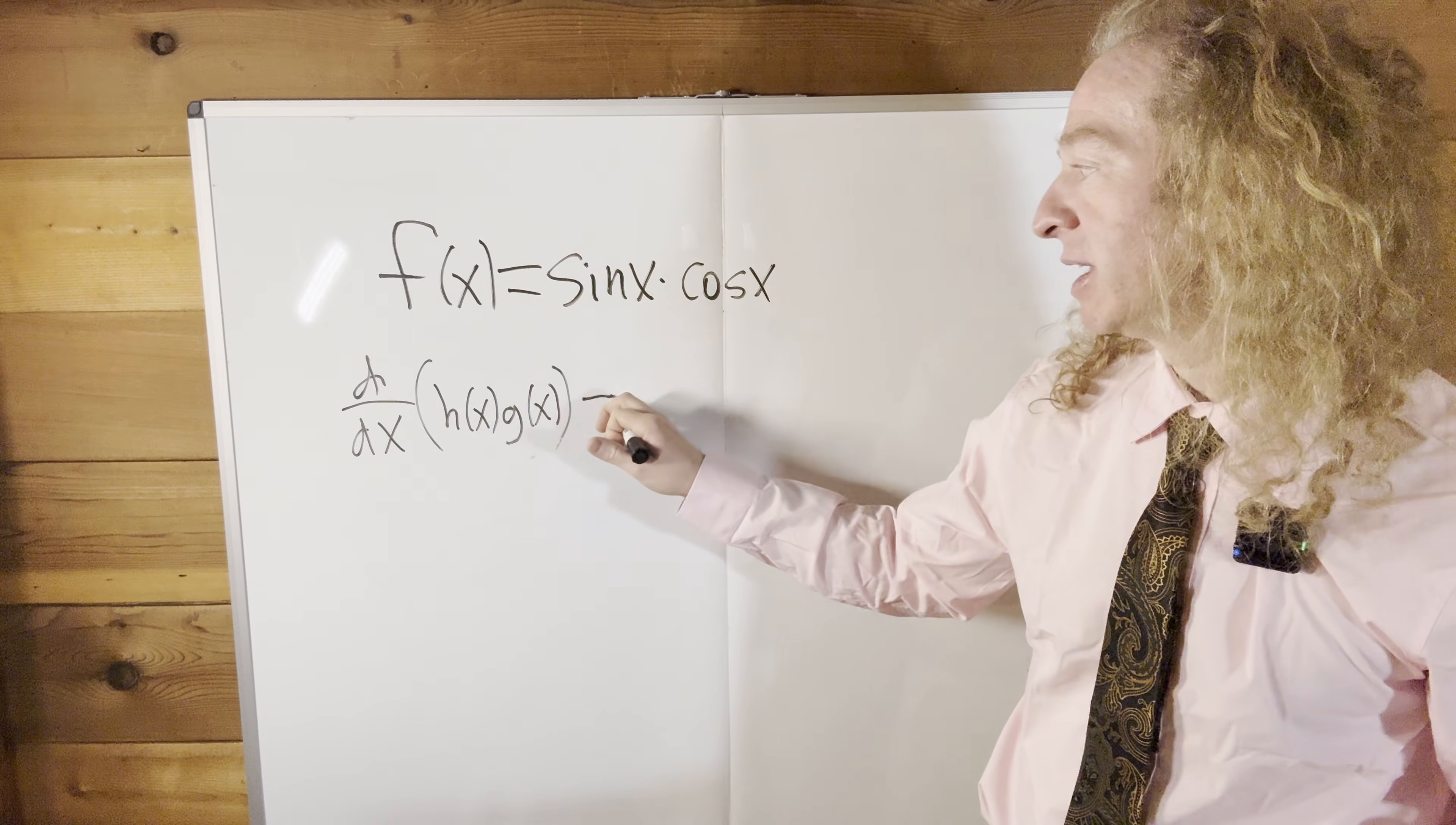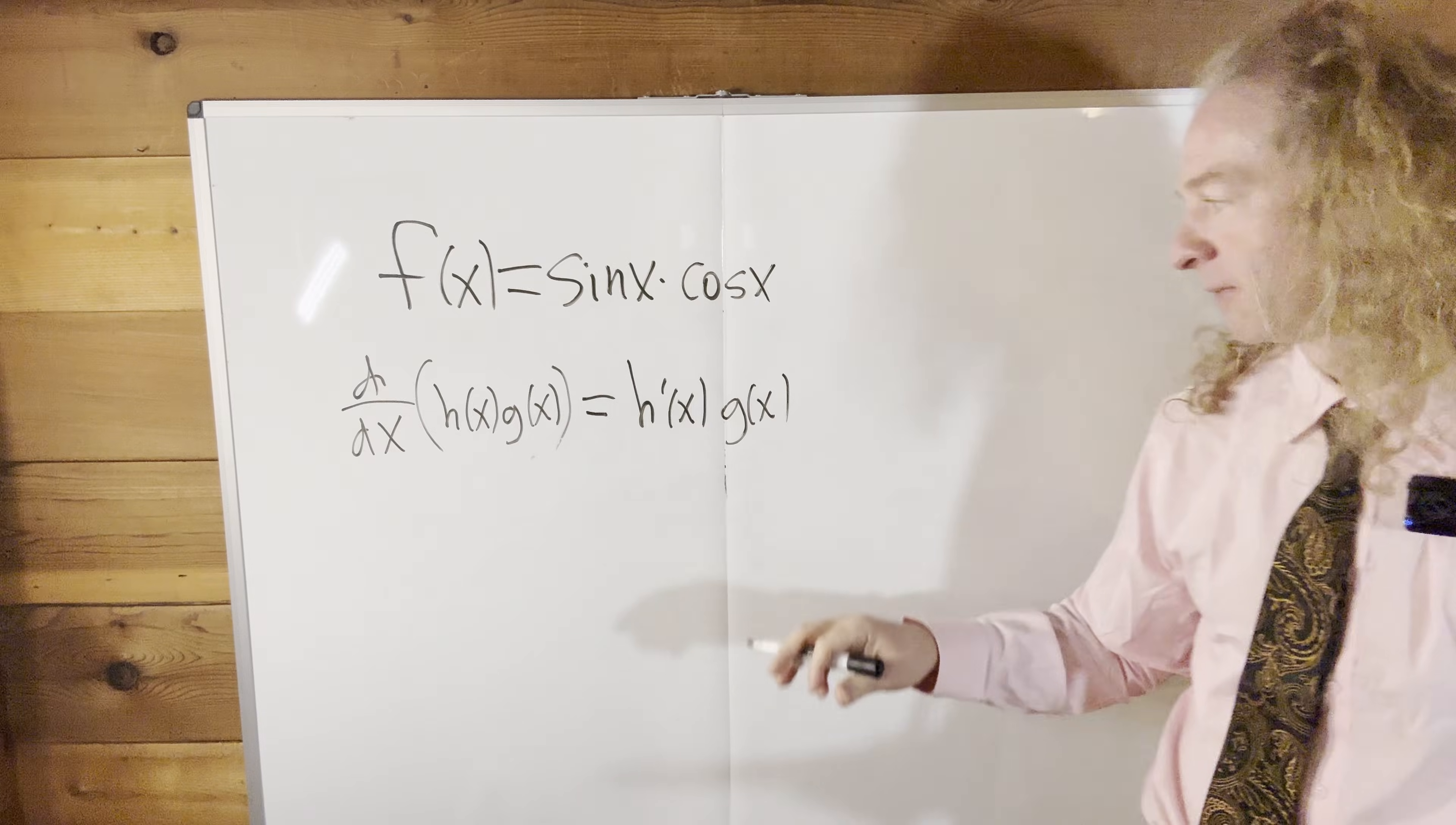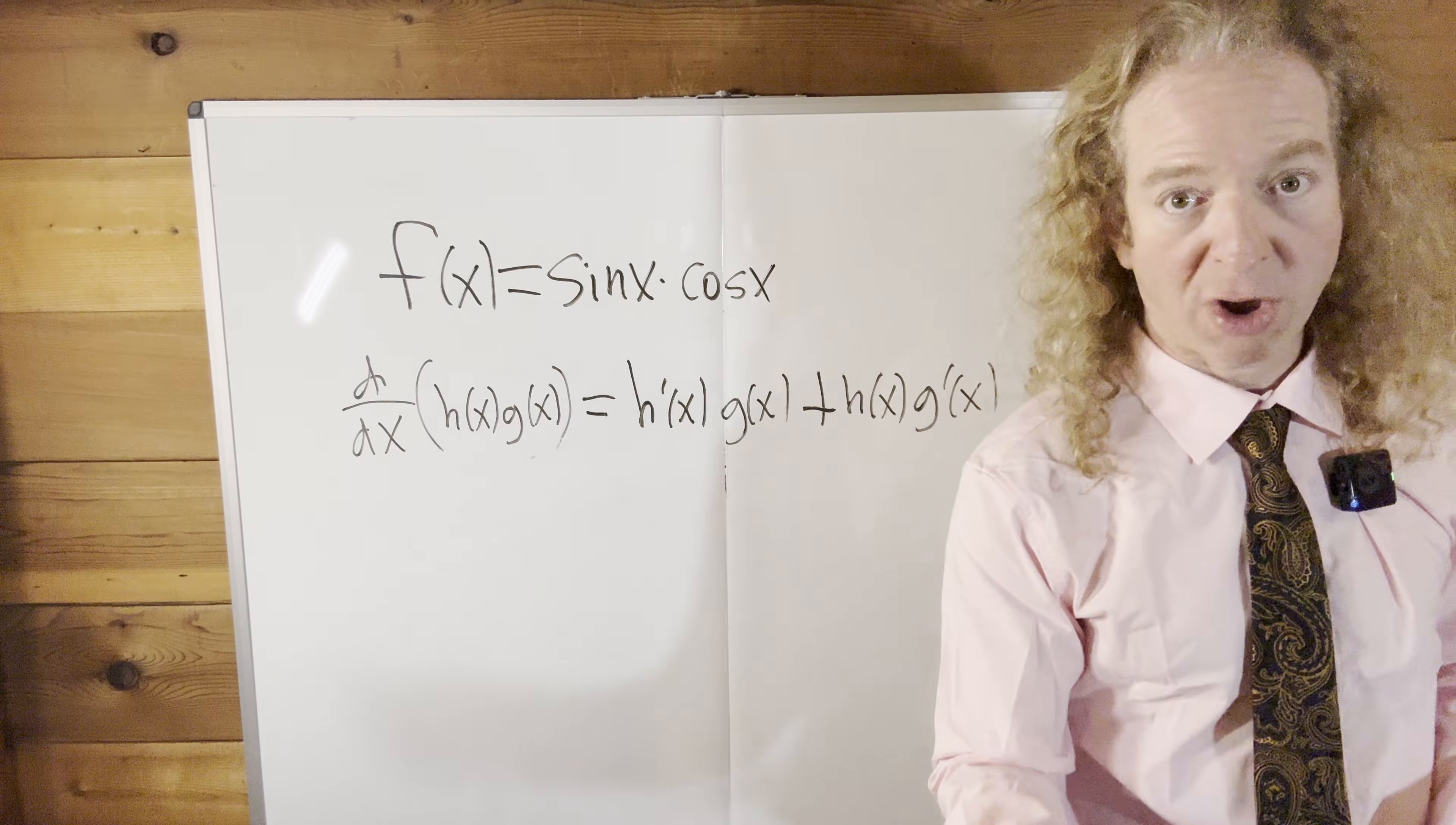And the formula says that it is the derivative of the first times the second plus the first times the derivative of the second. So that would be the formula for the product rule.